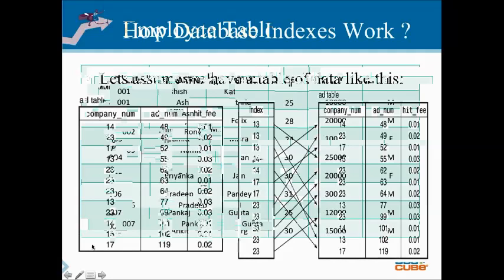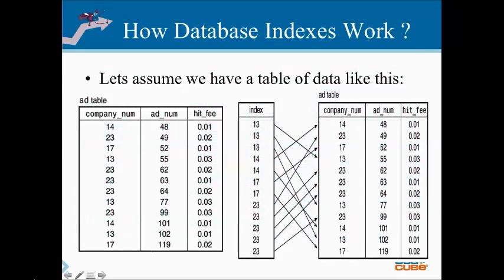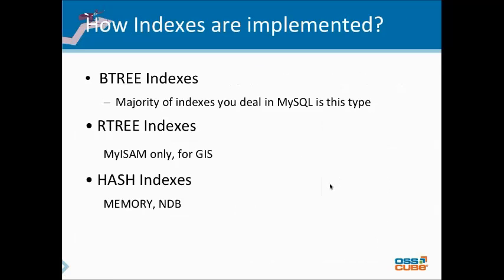Now let's see how the database works with indexes. The indexes created on a column link to the various data entries. Each index holds the address of the data. When looking for an employee ID, it goes to the index file, finds the entry, and goes to that particular address to read the data. That's the basic understanding of how indexes work.